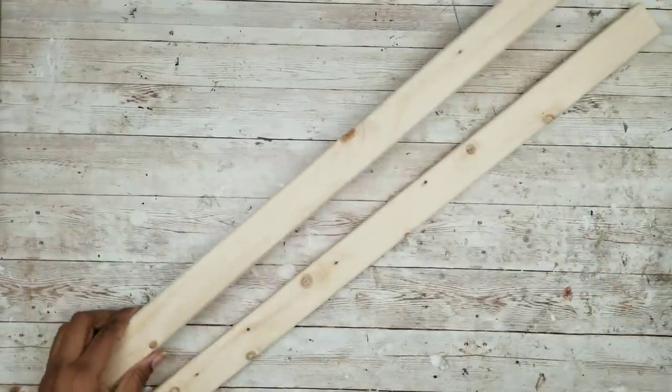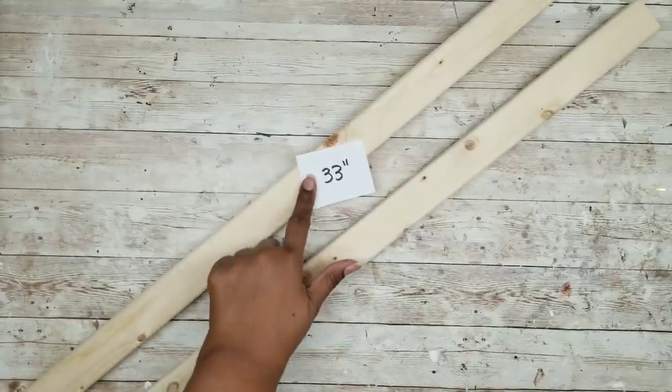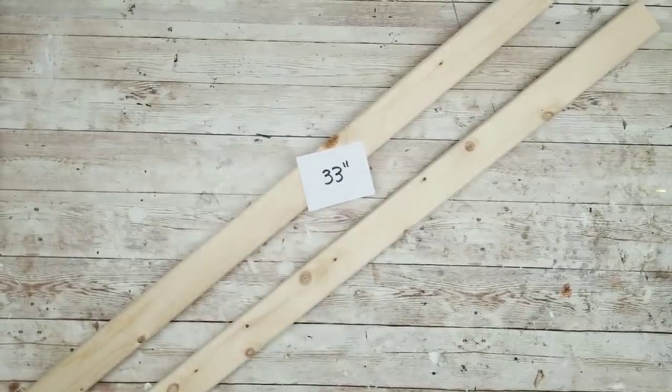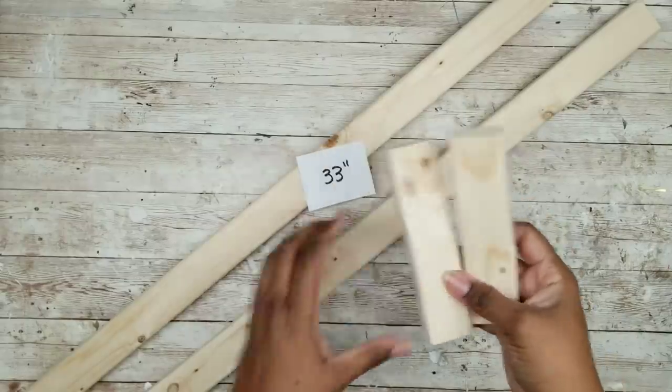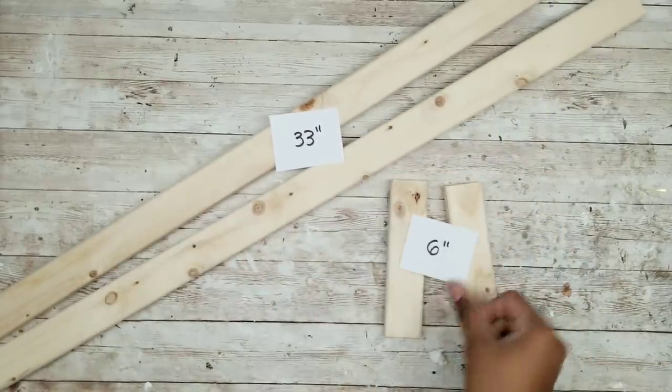Now the first thing we want to do is have the wood cut to size and we're going to cut two long pieces at 33 inches and two short pieces at 6 inches.